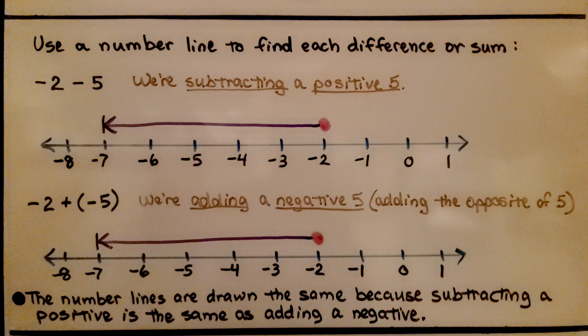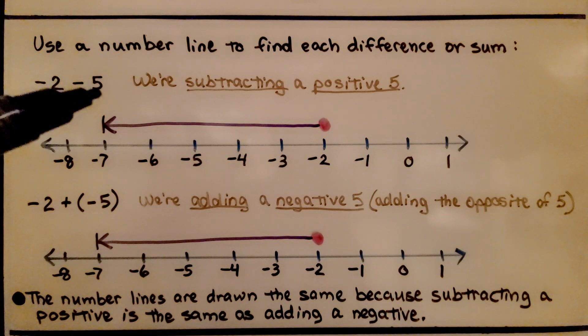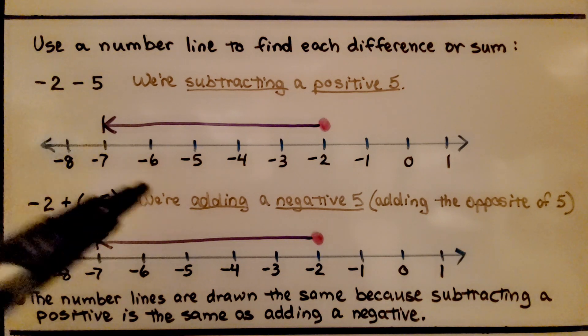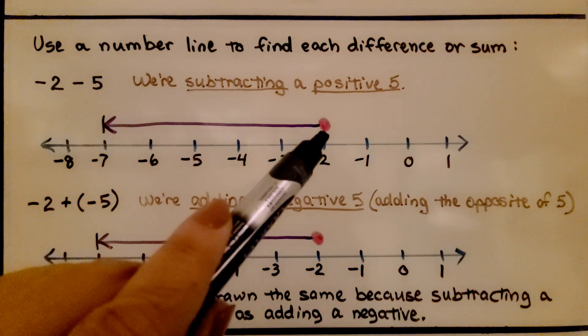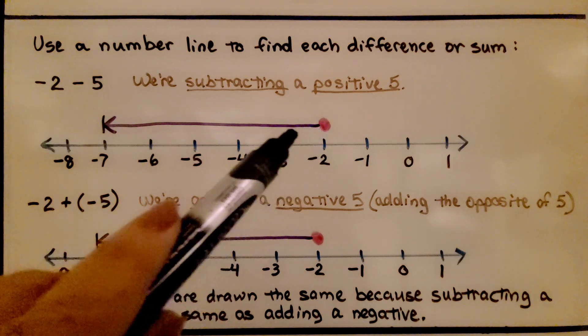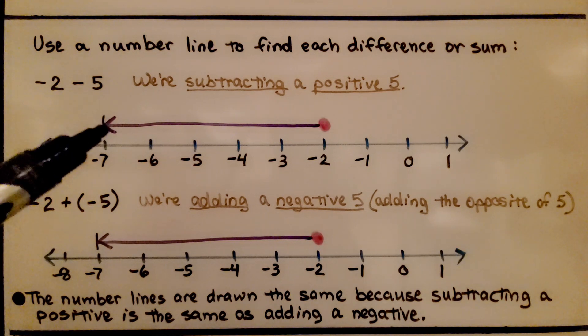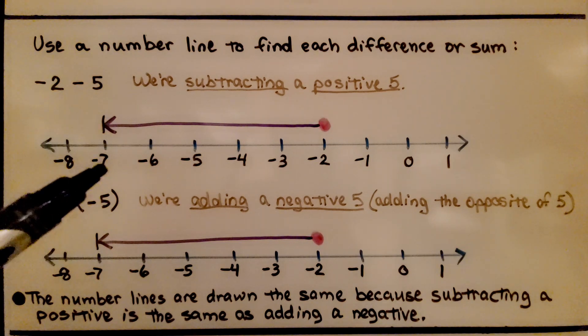Here it's telling us to use a number line to find each difference or sum. We have negative 2 minus 5. So we have a negative number and a positive number. We're subtracting a positive 5. We draw our point at negative 2 and we move to the left 5 units. We land at negative 7.